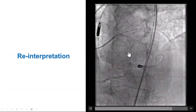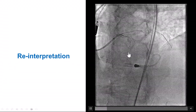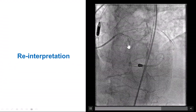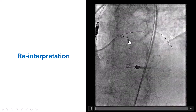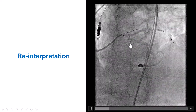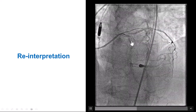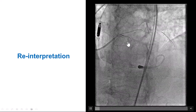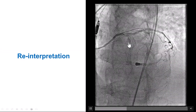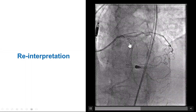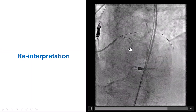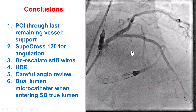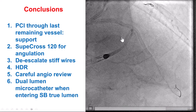Bringing back the original picture from when the wire went into the subintimal space: retrospectively, from what happened, it turns out that what we were seeing there was not the true lumen — it was probably the extravascular space, an extravascular hematoma. The true lumen was higher up along the course of that guide wire. We were literally fooled by the appearance of contrast and confused the true lumen with the false lumen.